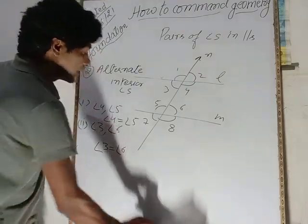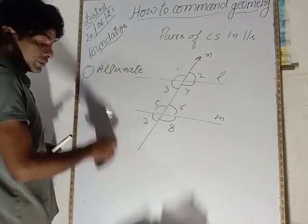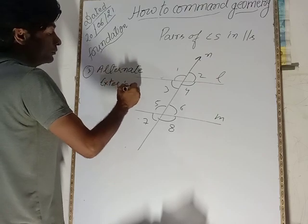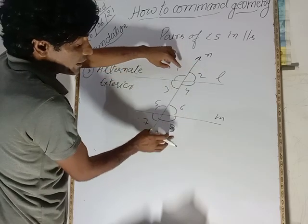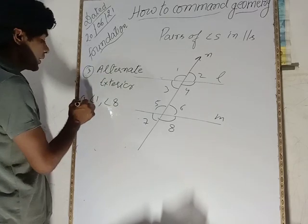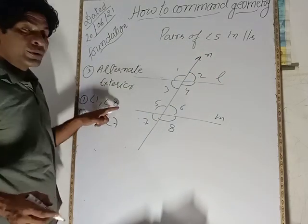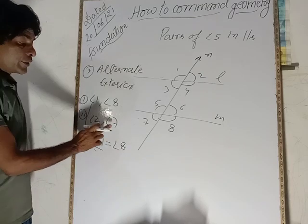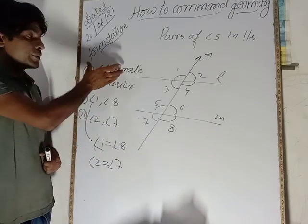The third pair is alternate exterior angles — angles outside the parallel lines. The two pairs are: angle 1 and angle 8, and angle 2 and angle 7. The characteristic property is that these are equal: angle 1 = angle 8, and angle 2 = angle 7.